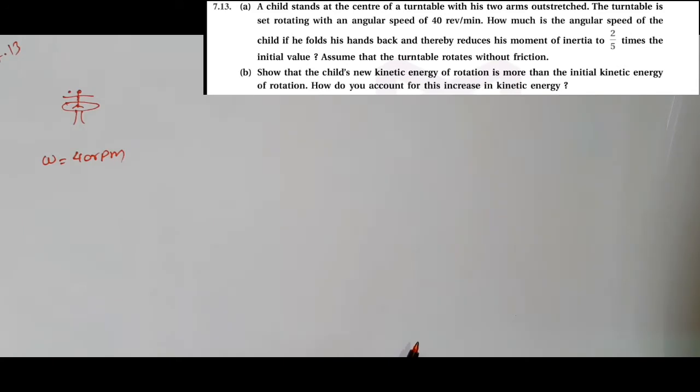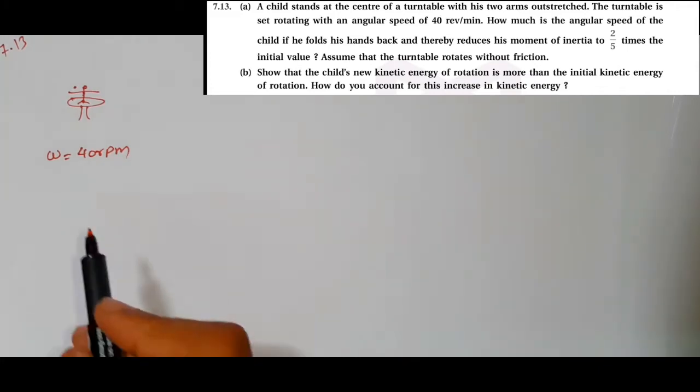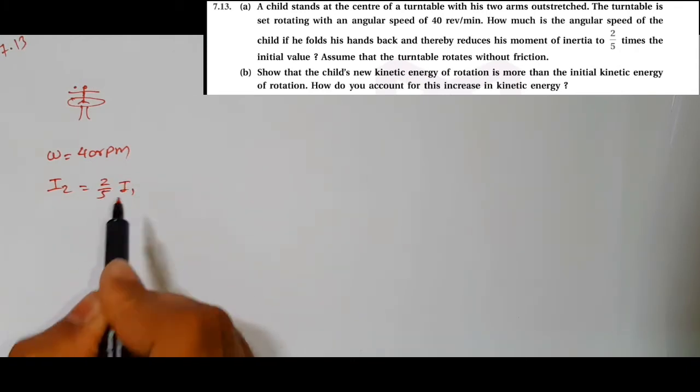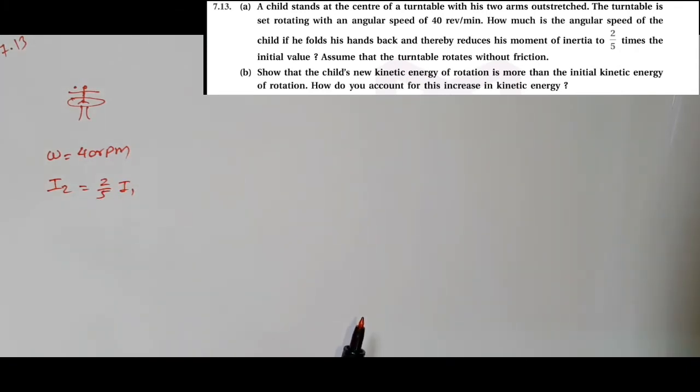How much is the angular speed of the child if he folds his hands back, and thereby the moment of inertia reduces to 2/5 times the initial inertia? So I2 equals 2/5 times I1. Assume that the turntable rotates without friction.